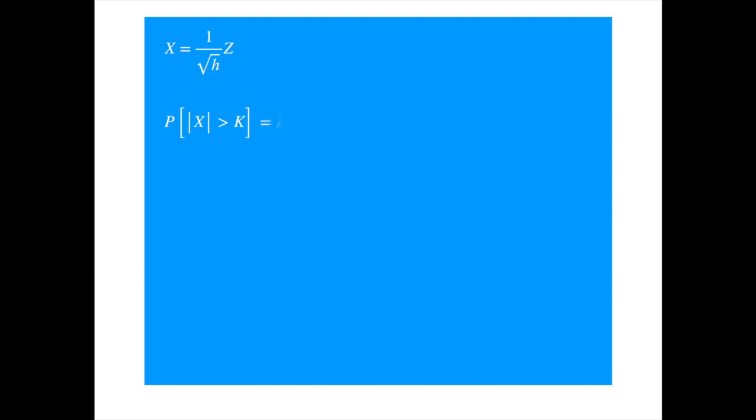Substituting the expression for X, we get the equation. We can take the positive square root of h to the right hand side to get the new expression. Taking the limit and evaluating the limit, we get the final result.